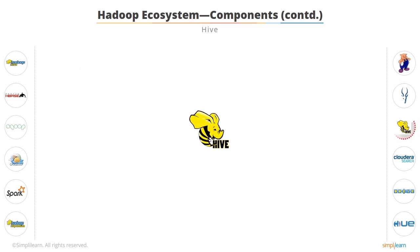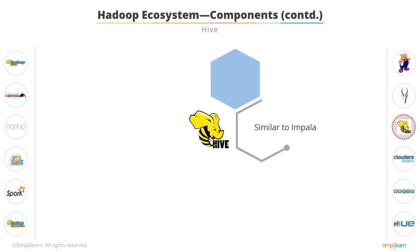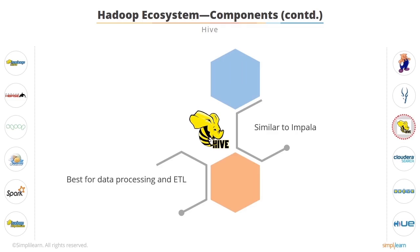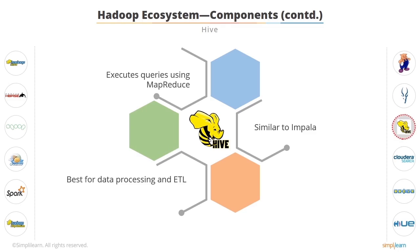You can also perform data analysis using Hive. It is an abstraction layer on top of Hadoop and is very similar to Impala. However, it is preferred for data processing and ETL (extract, transform, load) operations, whereas Impala is preferred for ad-hoc queries. Hive executes queries using MapReduce, but a user does not need to write any code in low-level MapReduce. Hive is suitable for structured data.